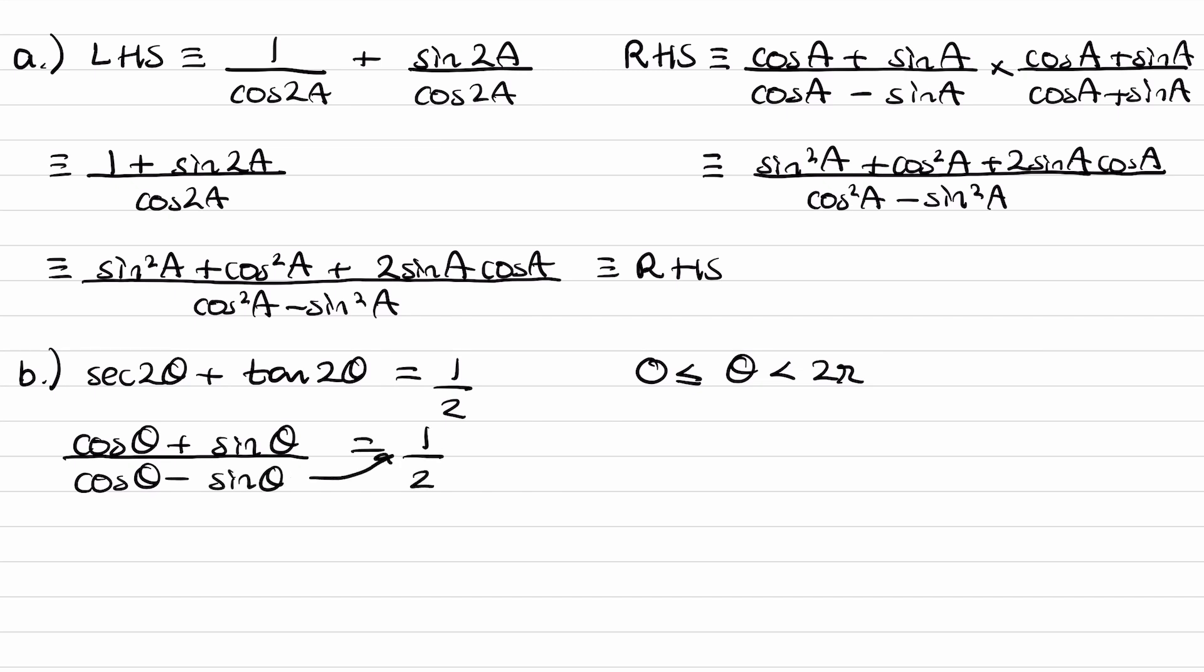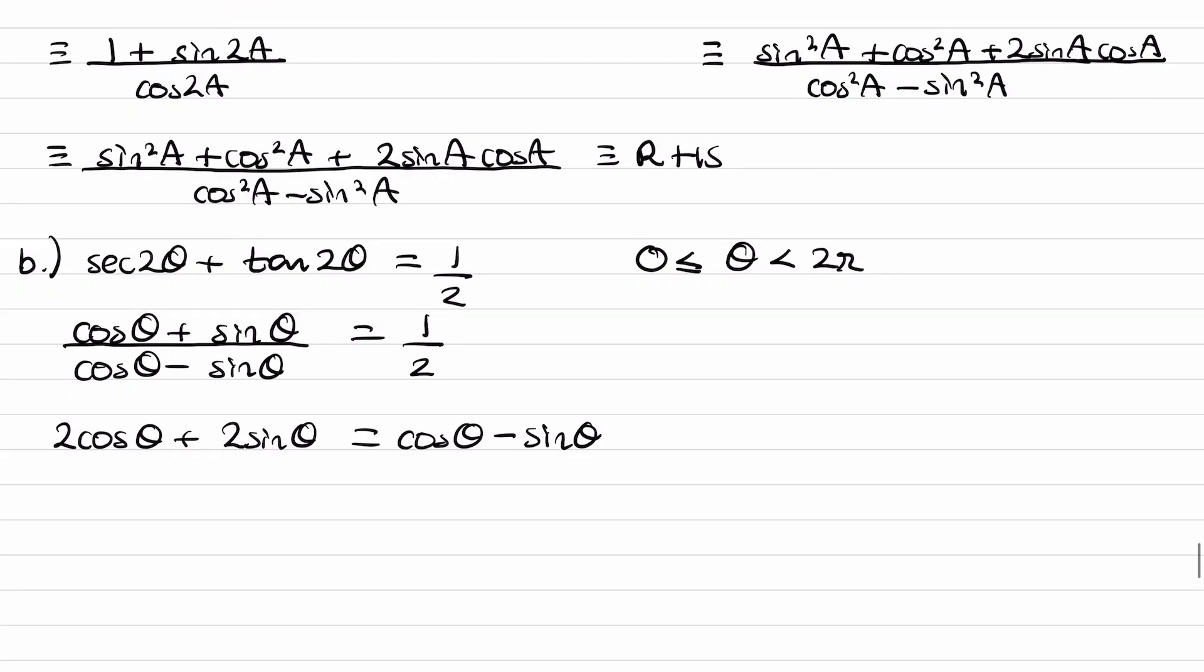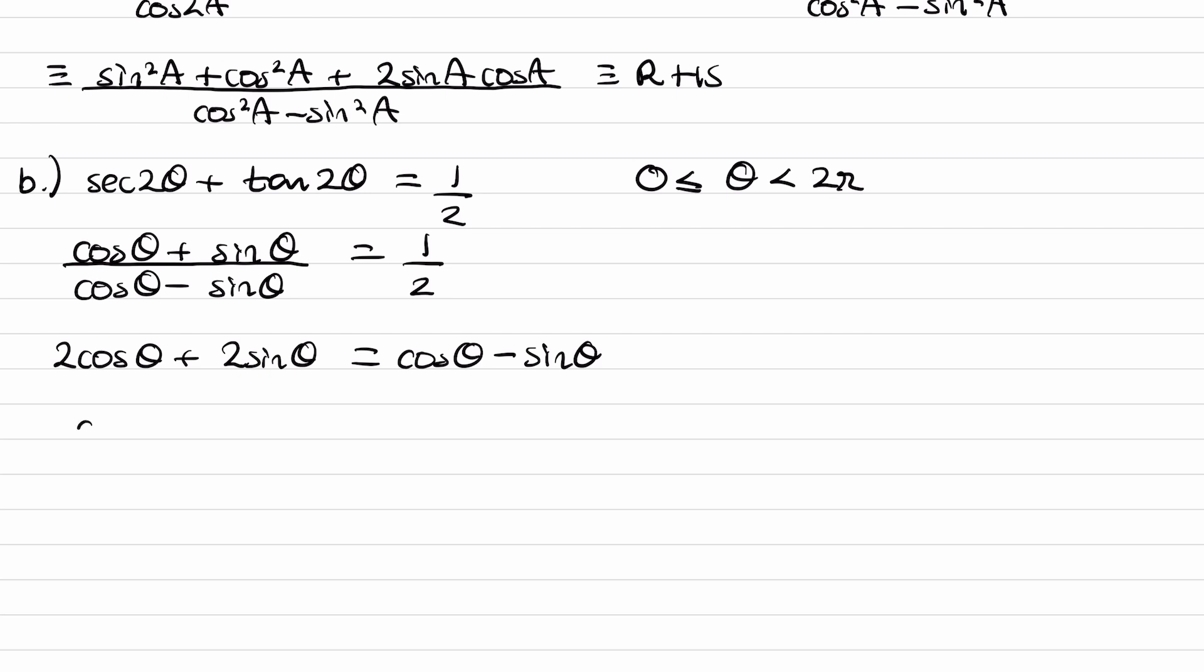Rearrange. Bring this to the right. Bring this to the left. We end up with 2 cos theta plus 2 sin theta is cos theta minus sin theta. And then rearrange this. We get cos theta is equal to minus 3 sin theta. Now I can divide everything by cos. So 1 is equal to minus 3 tan theta. So then tan theta is minus 1 third.